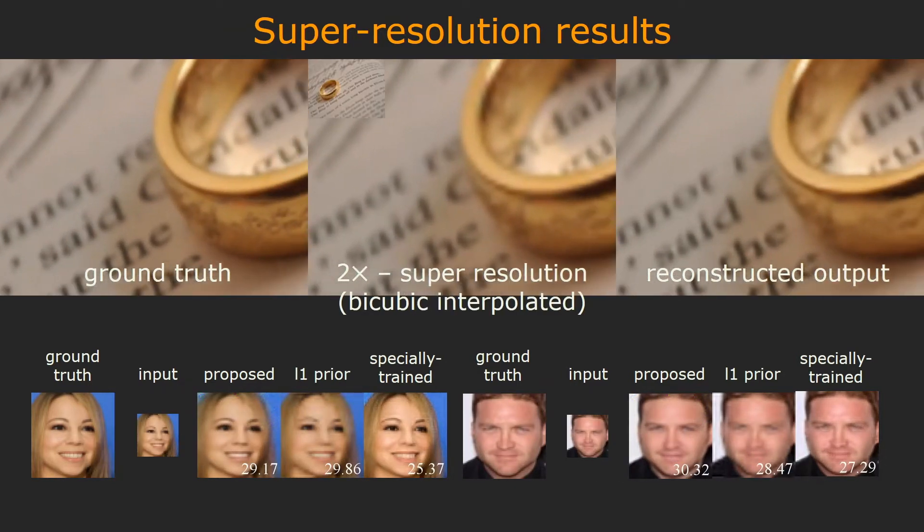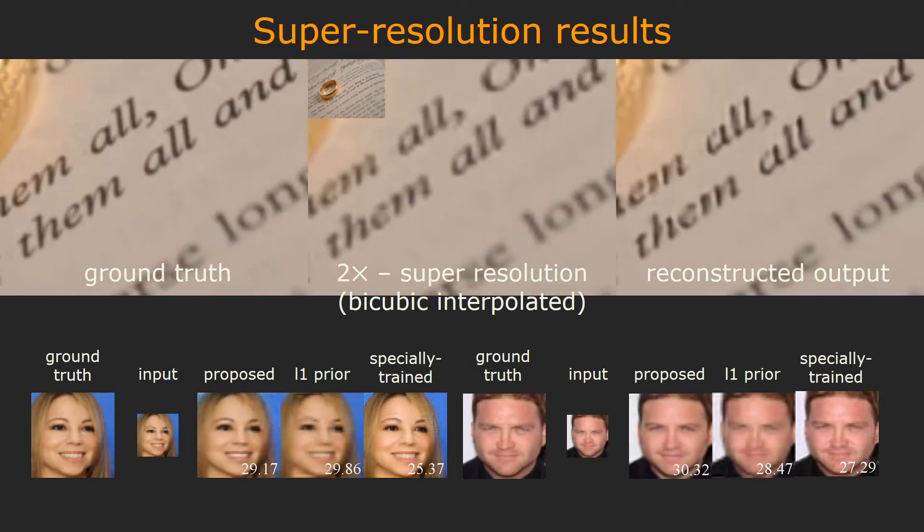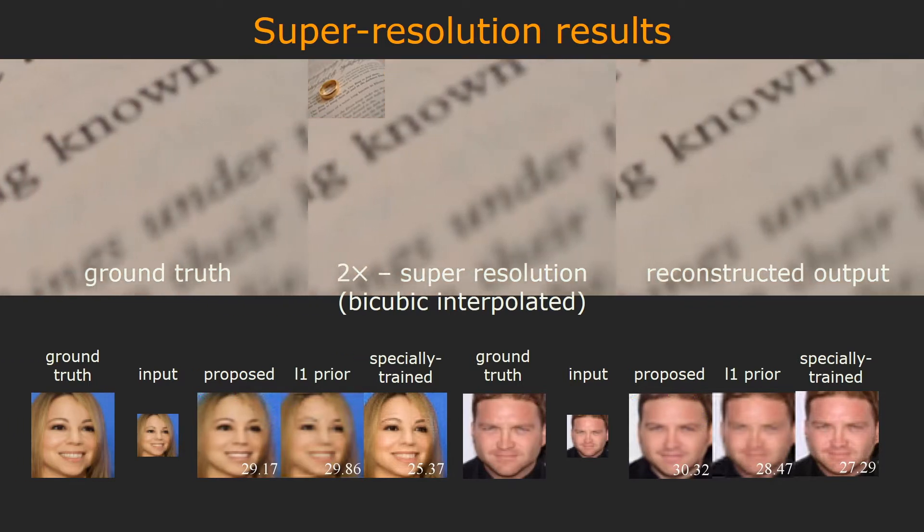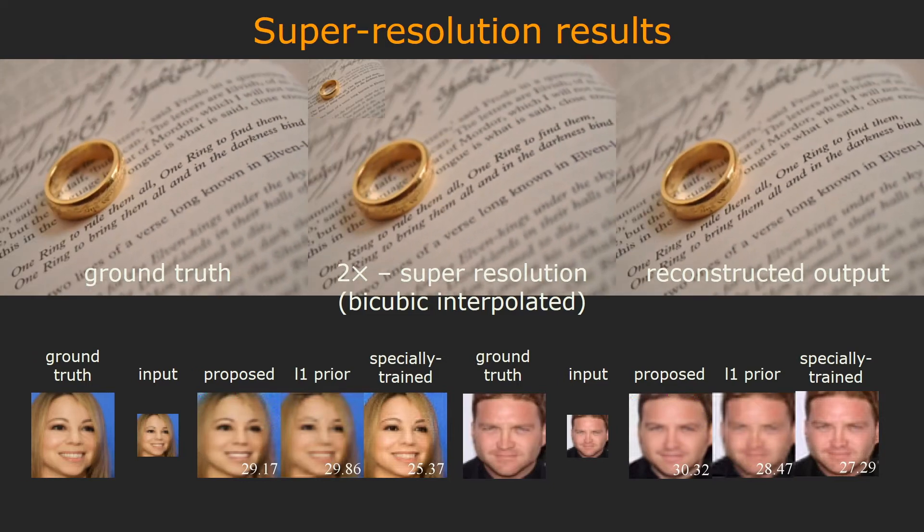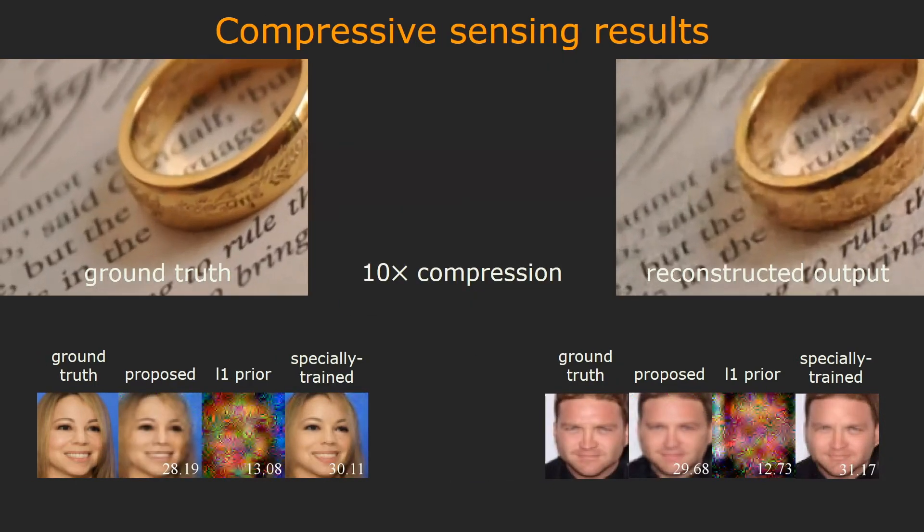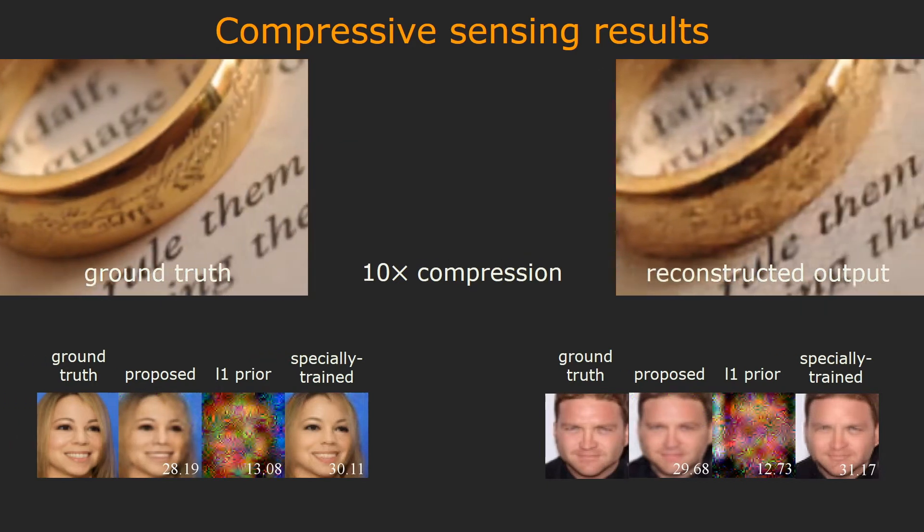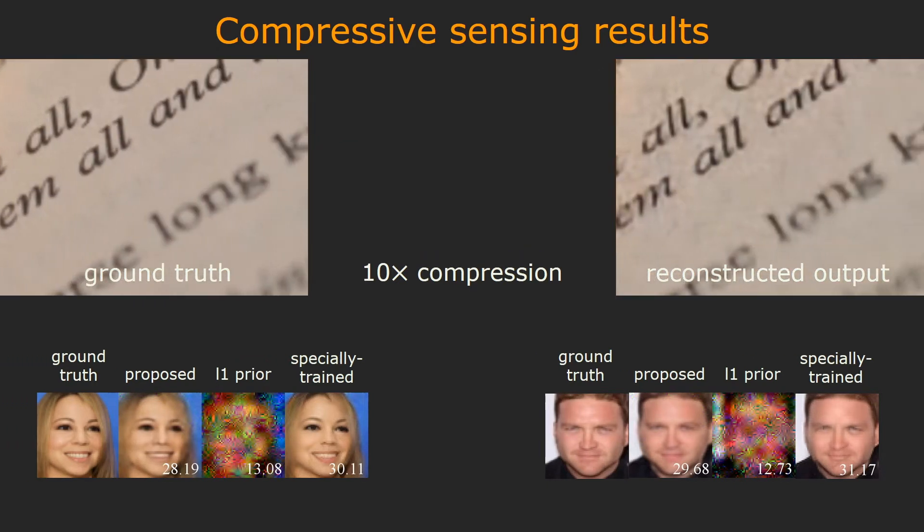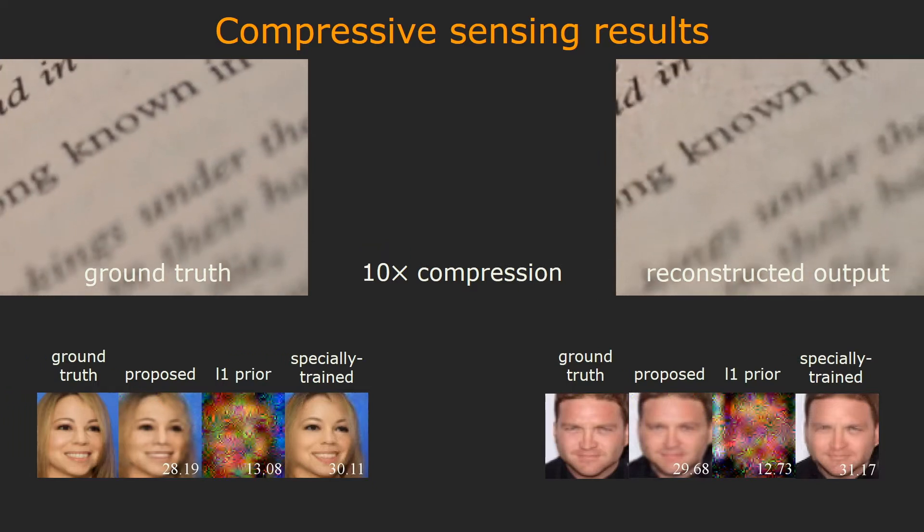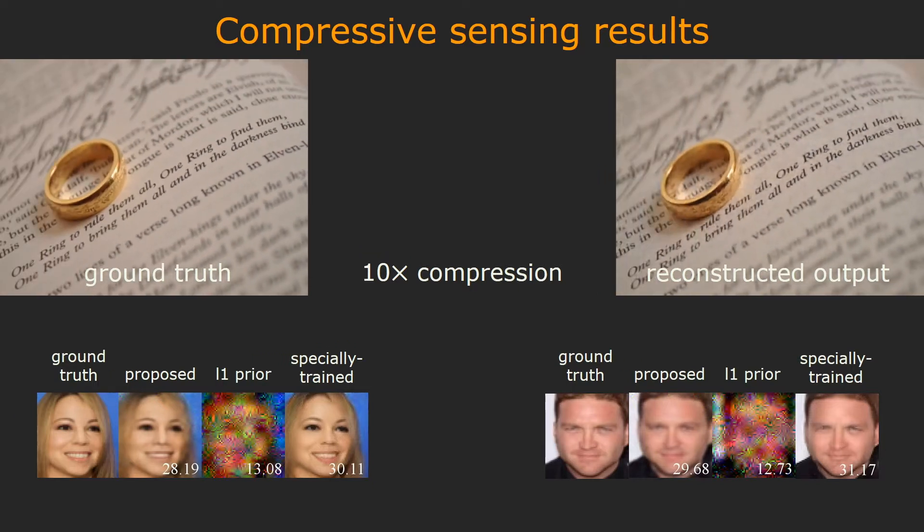Now we show the results of 2x super-resolution. These are the results of compressive sensing with 10x compression. Since the linear measurements form a vector, we do not plot it in this slide. Note that the same network used in previous slides is capable of solving this problem. This demonstrates the ability of the proposed framework to deal with various input dimensions.